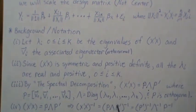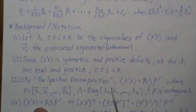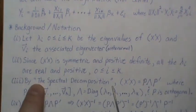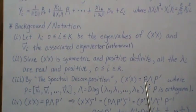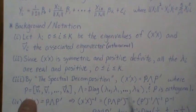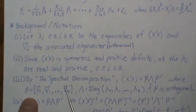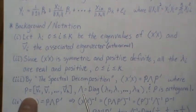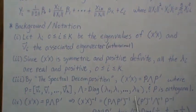The spectral decomposition of X'X — I have a video called the spectral decomposition theorem — can be represented as P Λ P', where P is the matrix of orthonormal eigenvectors, Λ is a diagonal matrix of the eigenvalues, and P is orthogonal.